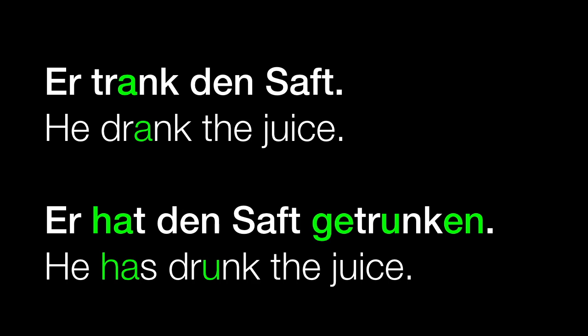If we look at the perfect form: er hat den Saft getrunken. Up front we have a form of the verb 'to have' — er hat — and then we push our verb all the way to the end of the sentence: getrunken. We see the GE prefix, and notice the vowel changed again to a U — getrunken — and we have an EN on the end of it. Er hat den Saft getrunken.